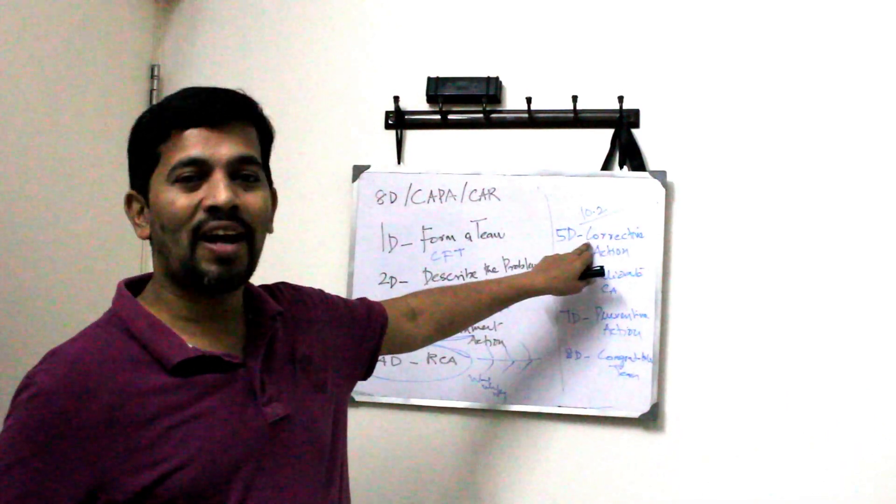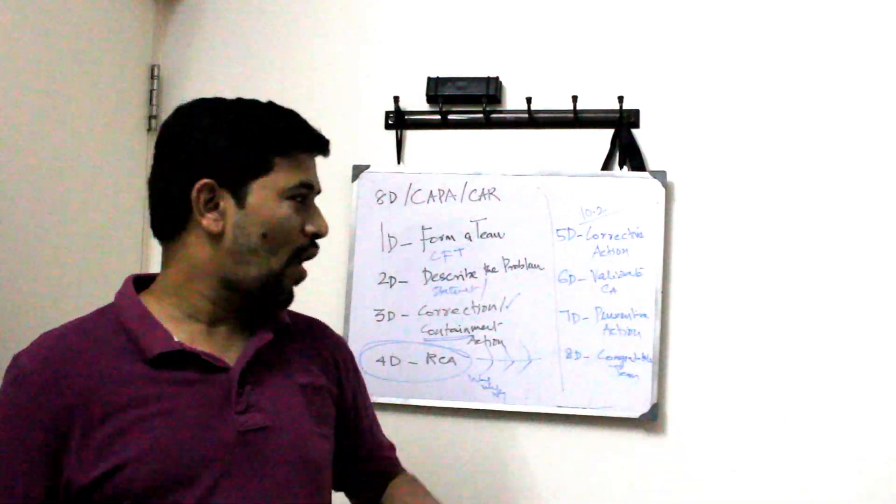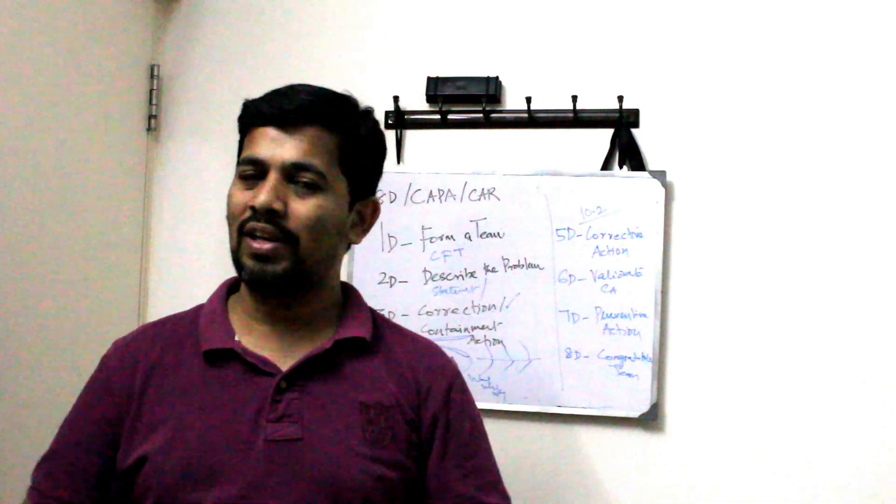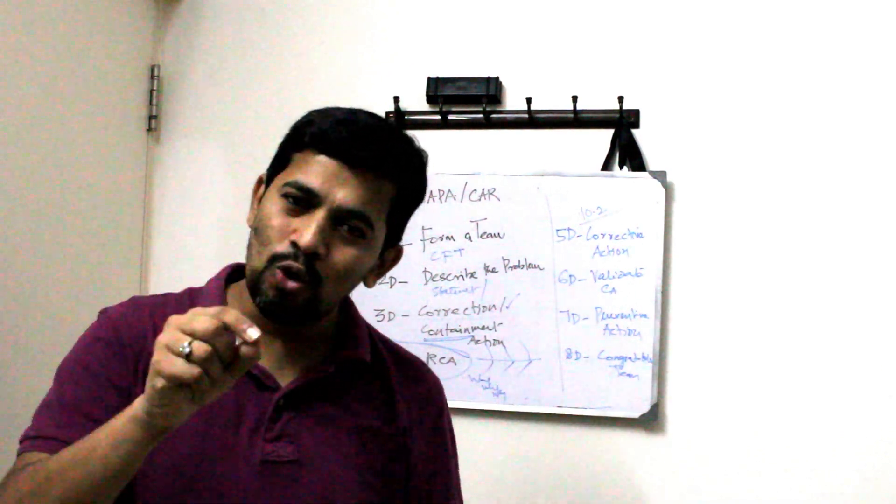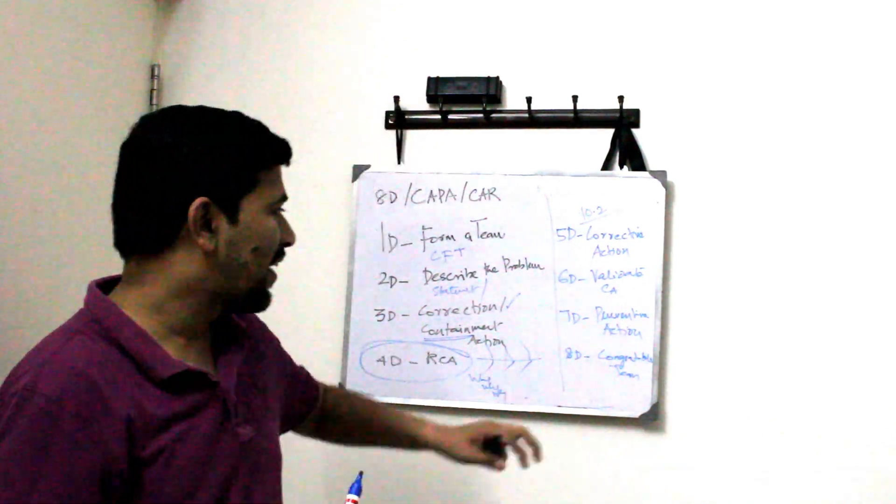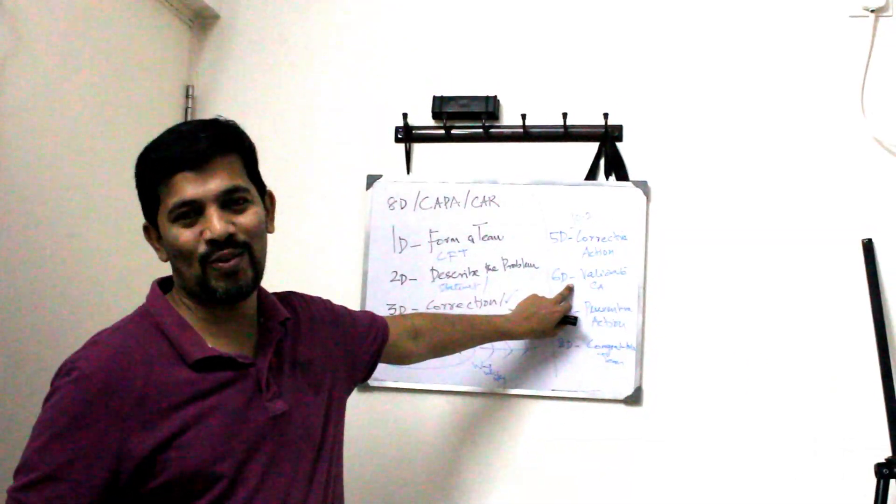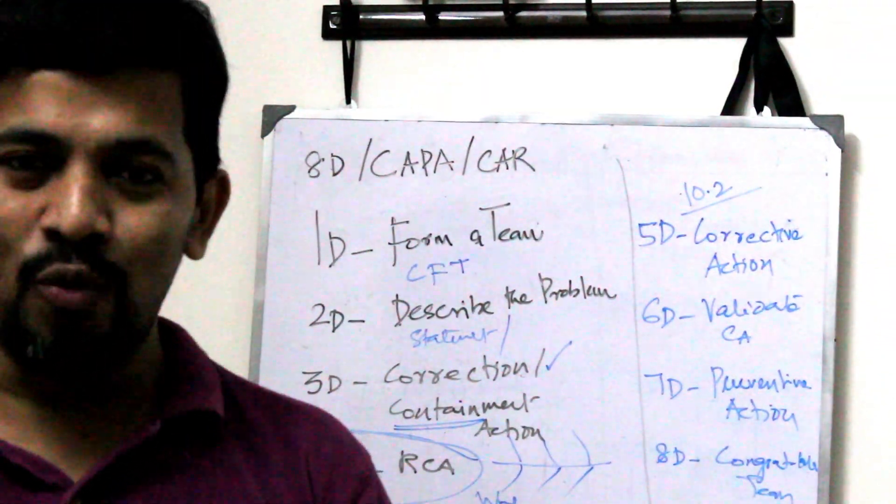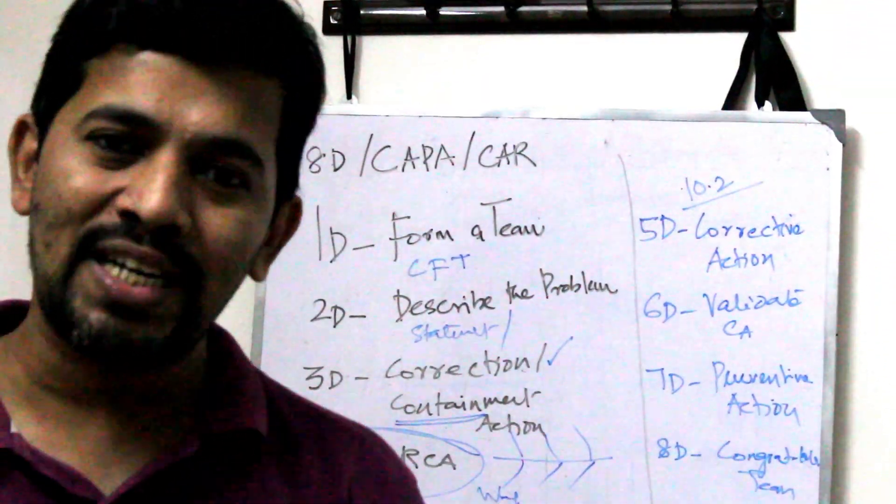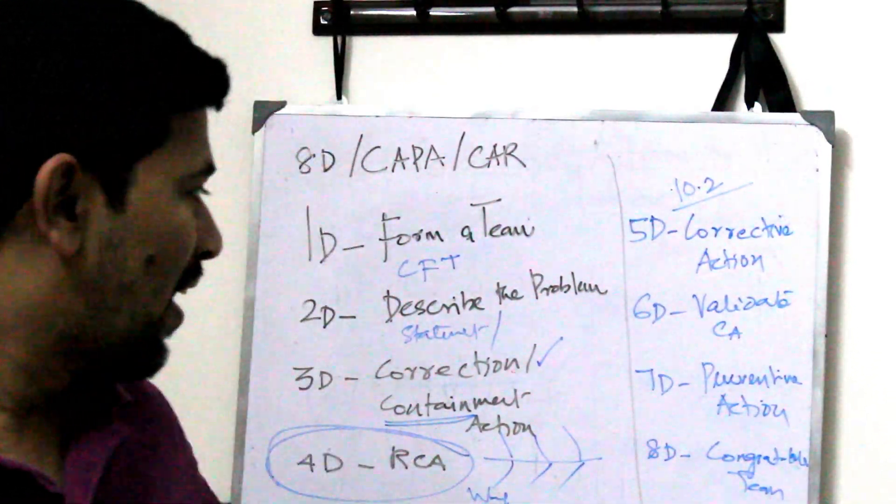You have taken an action to solve the problem permanently. That is called corrective action. And then you have called validate the corrective action. Let's say I have taken some efforts. I have done some automation. Whether those automation are working or not that is called validate the corrective action. We have to validate. We have to do it again to confirm whether the proposal whether the actions are effective.